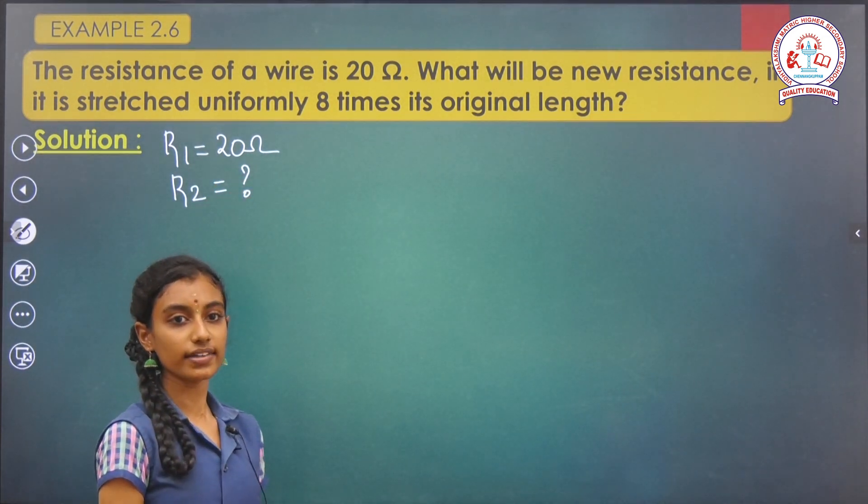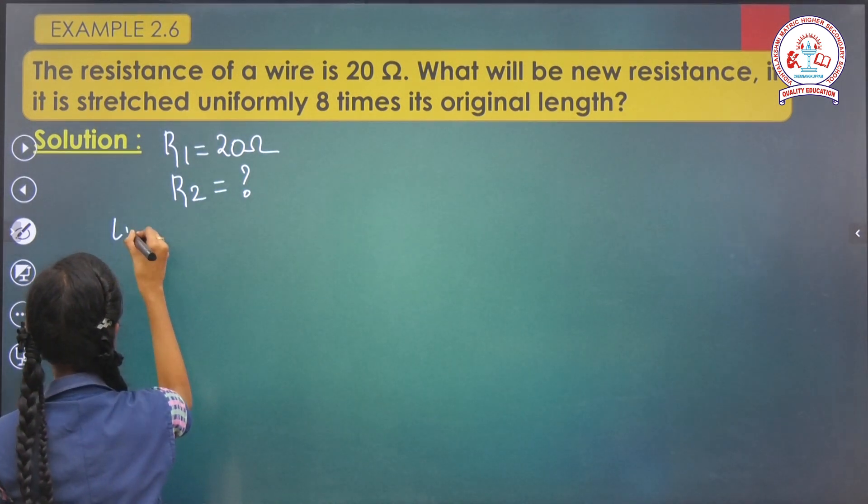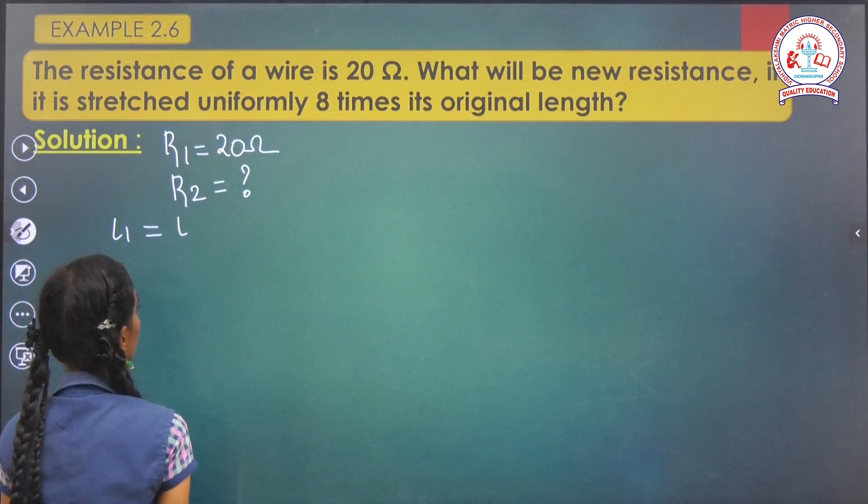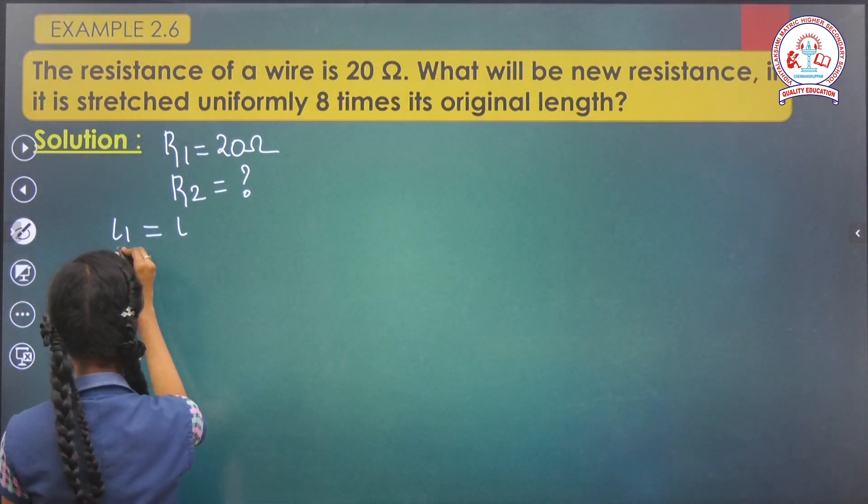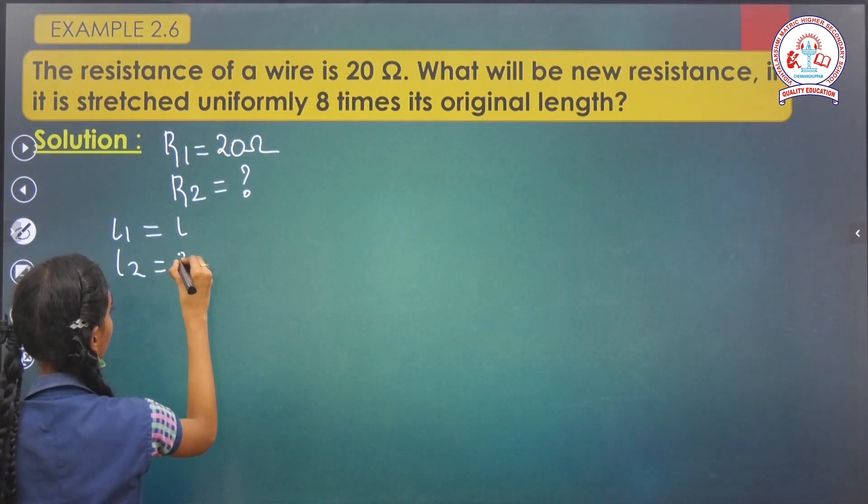The length of the wire is determined by L1. L1 equals L. The new length is L2, which is 8L1.